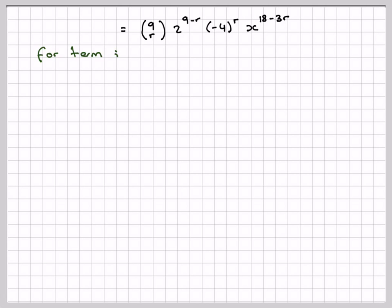So for the term independent of x, 18 minus 3r is equal to 0, that means that 18 must be equal to 3r, r must be equal to 6. Now substitute that back into here.